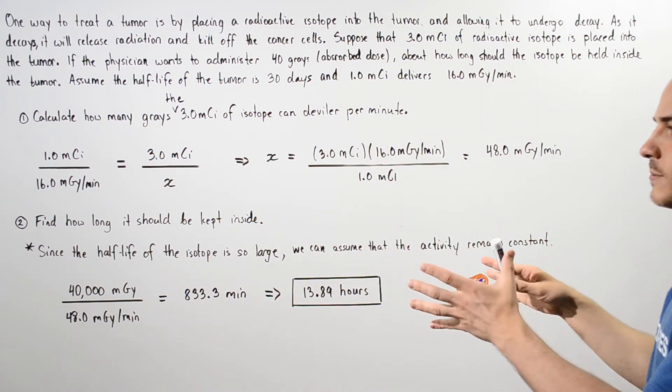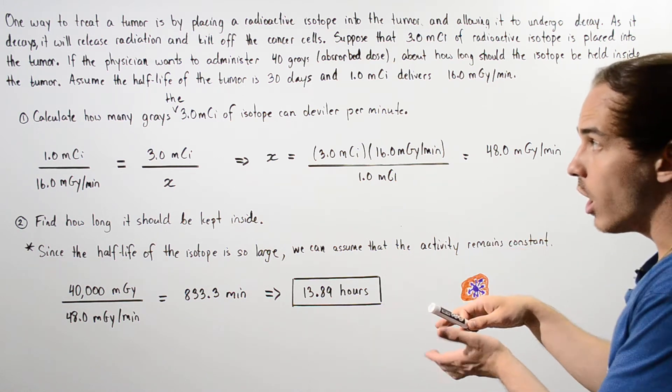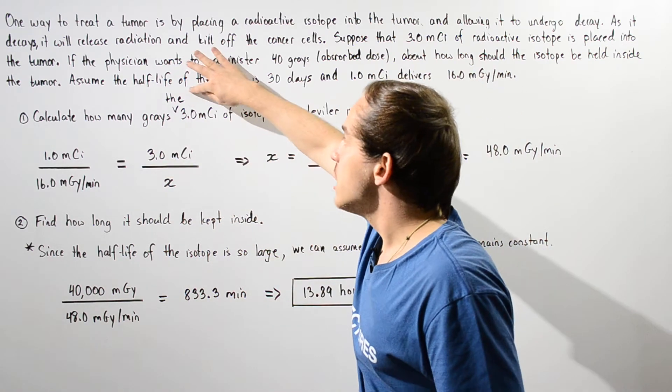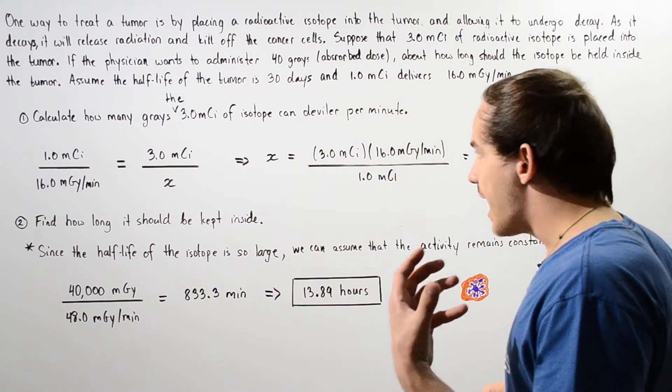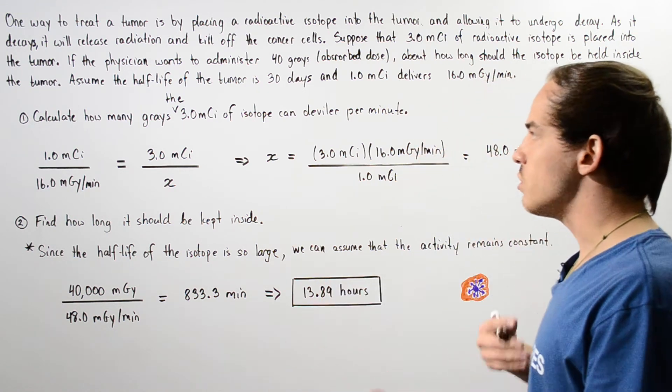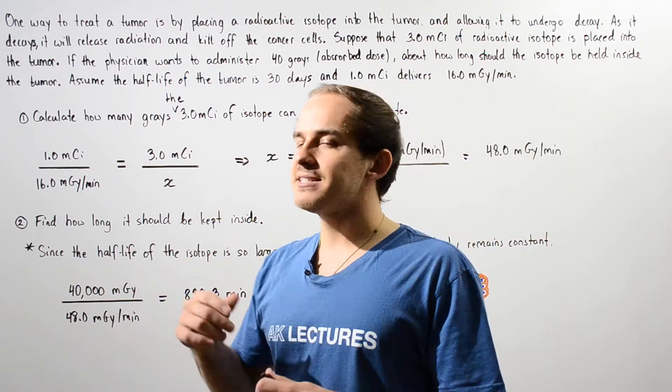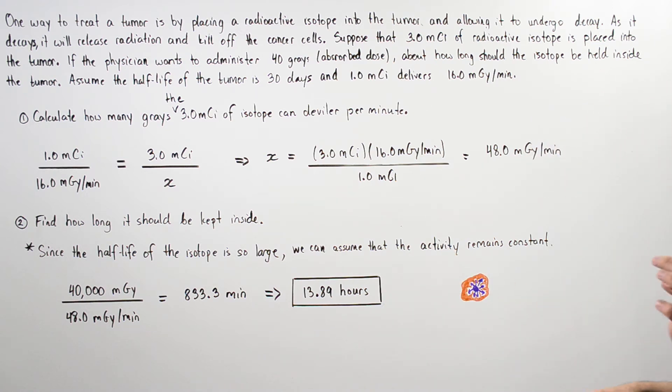We want to break down this example into two steps. In step one, we want to calculate how many grays the three millicuries of isotope can actually deliver every single minute. And in step two, we want to find how long it should be kept inside.